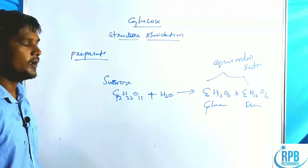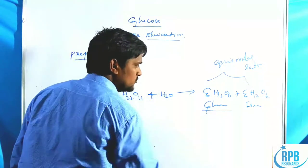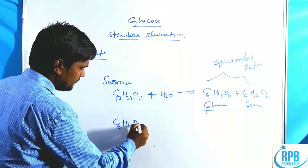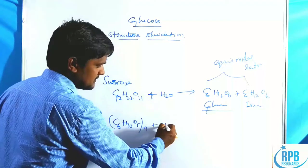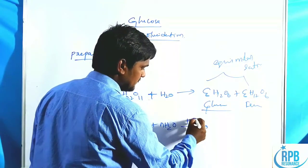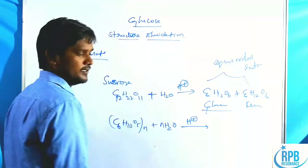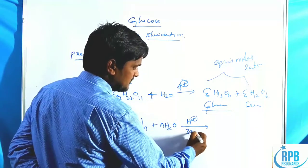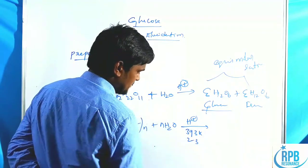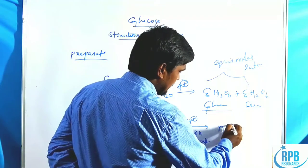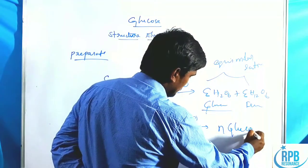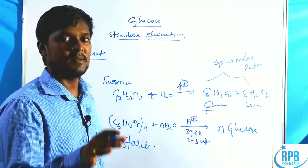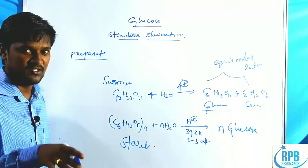The second preparation method uses starch (C6H10O5)n, which is treated with n moles of water in the presence of dilute HCl as acid at around 393 Kelvin and atmospheric pressure. This gives n moles of glucose. These two are the best preparation methods for glucose.